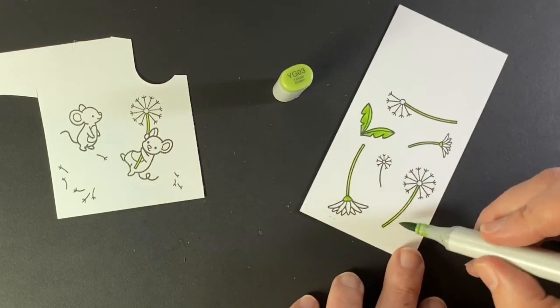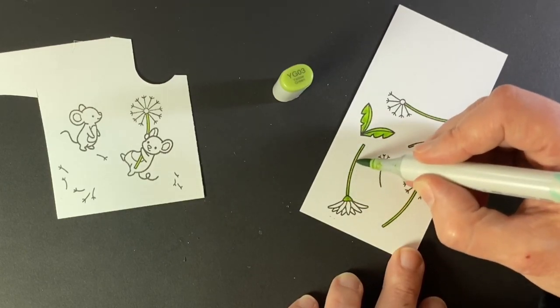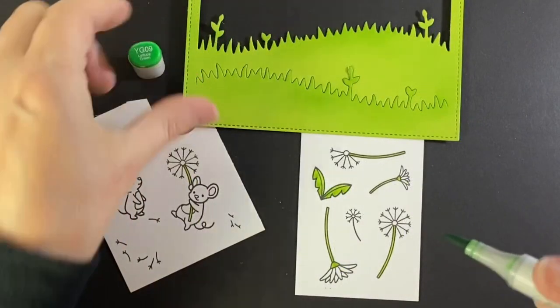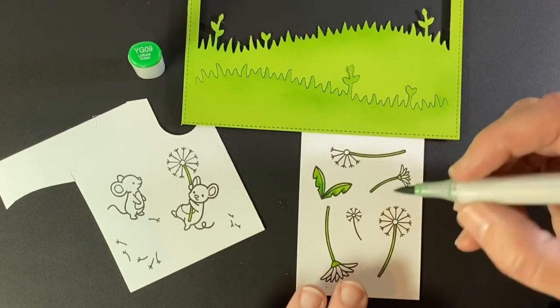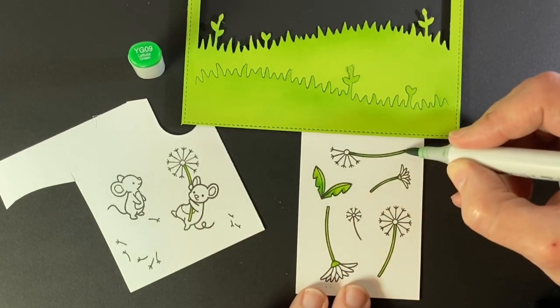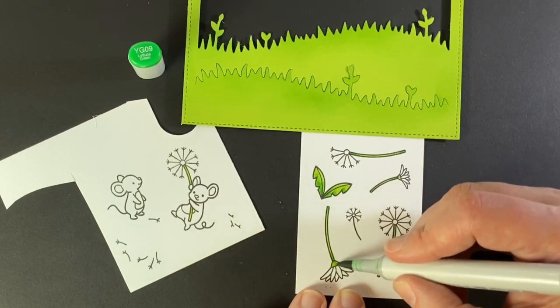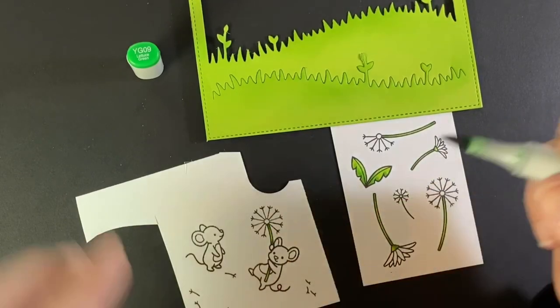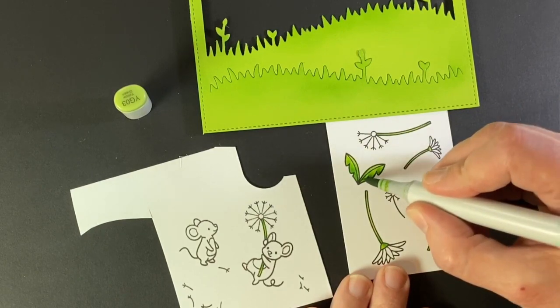I'm not really trying to shade them as much as just give them some highlight. Now I decided I want them a little different than the background so I'm brightening them up with a YG09, giving them a bit different look than the grass so that they don't blend in too much.